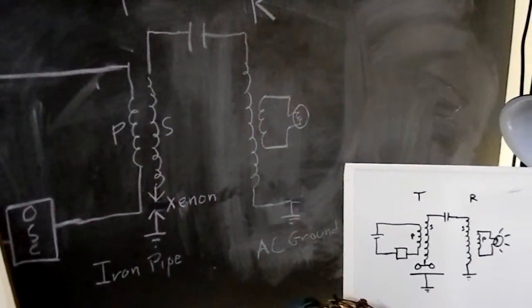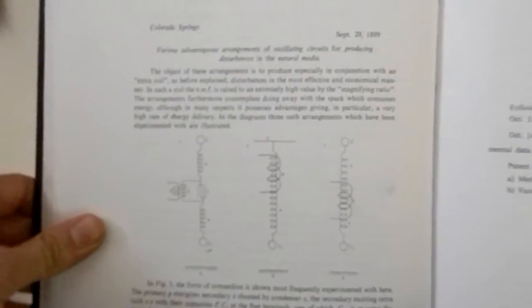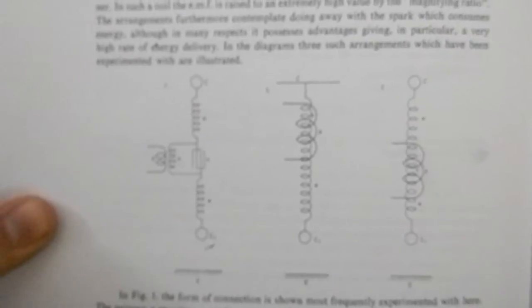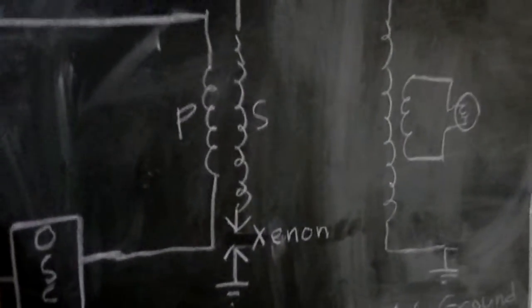This is towards a replication of these circuits in the Colorado Springs notebook. I'm not sure if you can see those very well, but particularly he started using a spark gap in between here, like in this diagram. So I used a xenon.